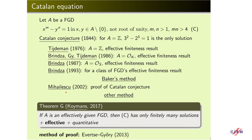Later, Mihailescu proved the Catalan conjecture over Z with a different algebraic method. Three years ago, Cojocaru proved the following general result: if A is an effectively given finitely generated domain, then the Catalan equation has only finitely many solutions, and he proved this in an effective and quantitative form.